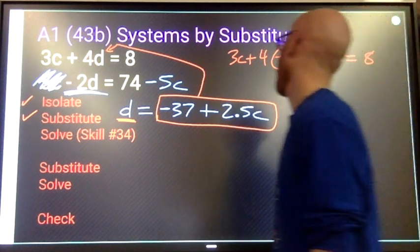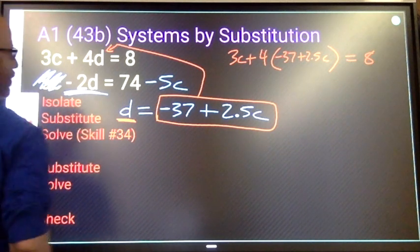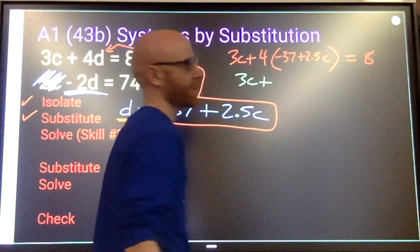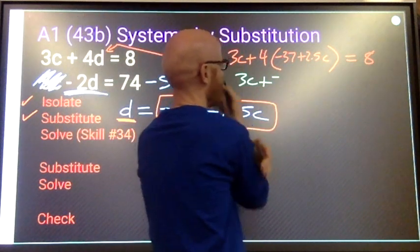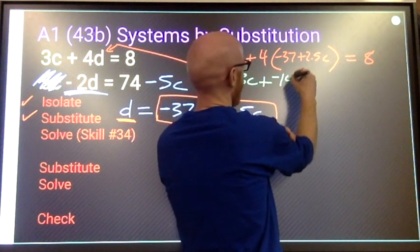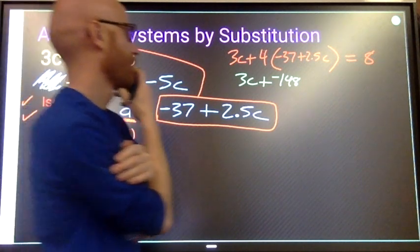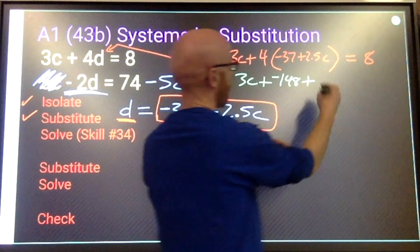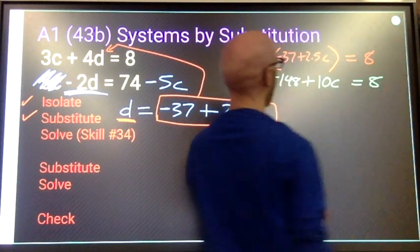Distribute. 3c plus 4 times negative 37 is negative 148 plus 4 times 2.5 is 10c equals 8.